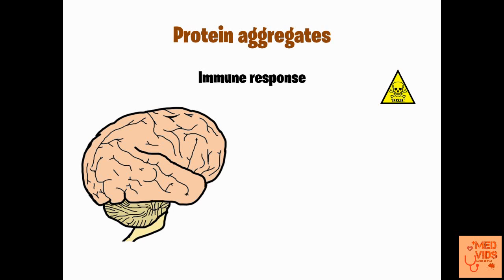Another interesting fact is that if protein aggregates are present in one particular region of the brain, they are also found to move from that region to another region of the brain, causing damage there as well. This particular property is found to be very similar to that of prions. However, although this property is similar to prions, these diseases are not transmitted from person to person — diseases caused by prions are actually transmitted from person to person. That is one of the differentiating features between neurodegenerative diseases and diseases caused by prions.